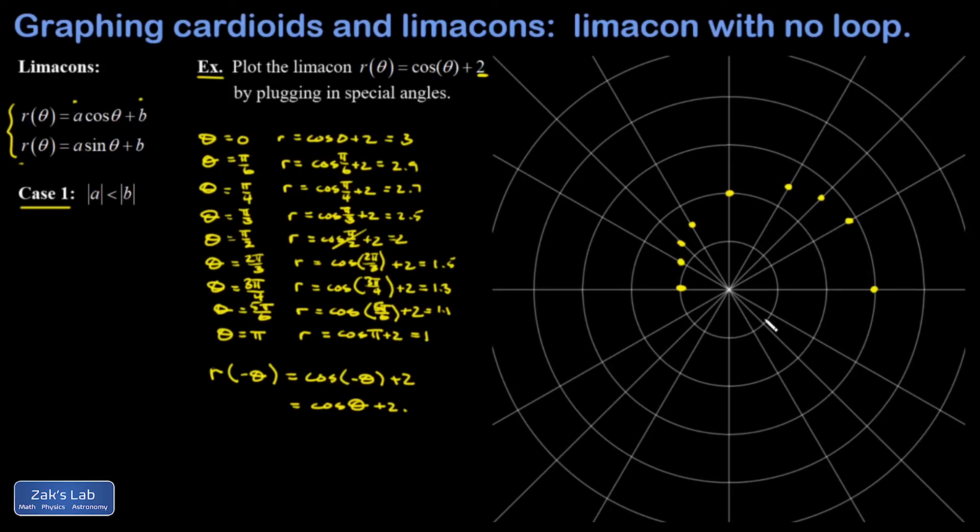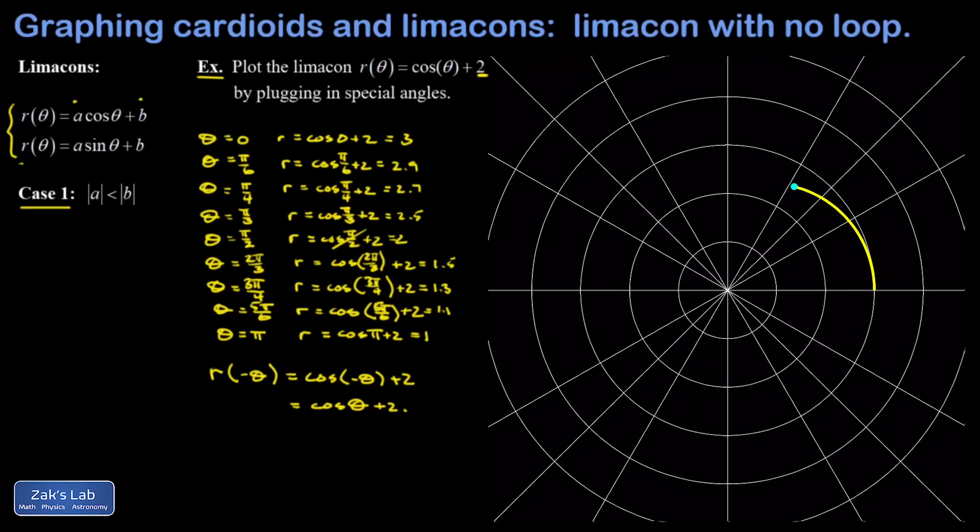This means as I'm sampling positive values of theta, I'll get the same point as if I sample the same negative value of theta. That just copies out a reflection of this curve across the horizontal axis. So I can quickly get the rest of my points, and there's all the points in the limaçon for the special angles.